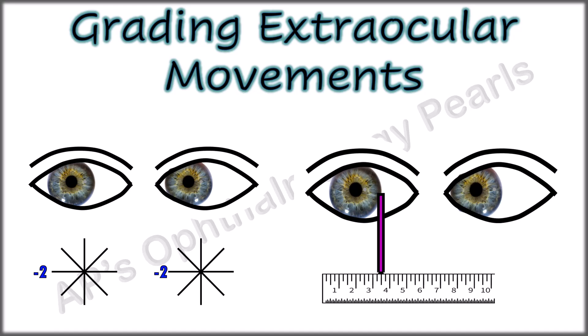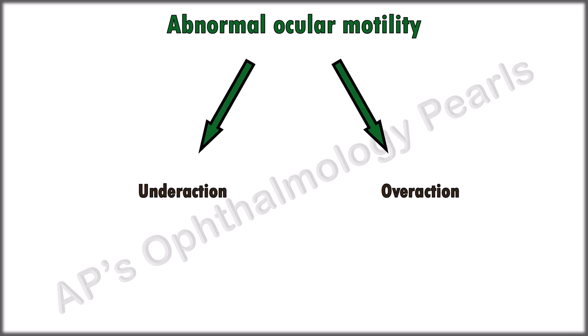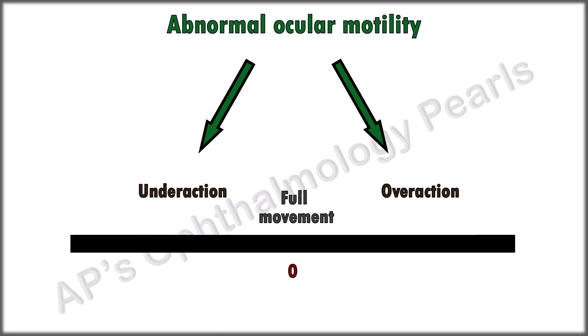Today we shall discuss the easy clinical grading of extraocular movements. Abnormal ocular motility can either be under action or over action. When grading them on a 9-point scale, 0 refers to full movement, minus numbers refer to under action and plus numbers to over action.